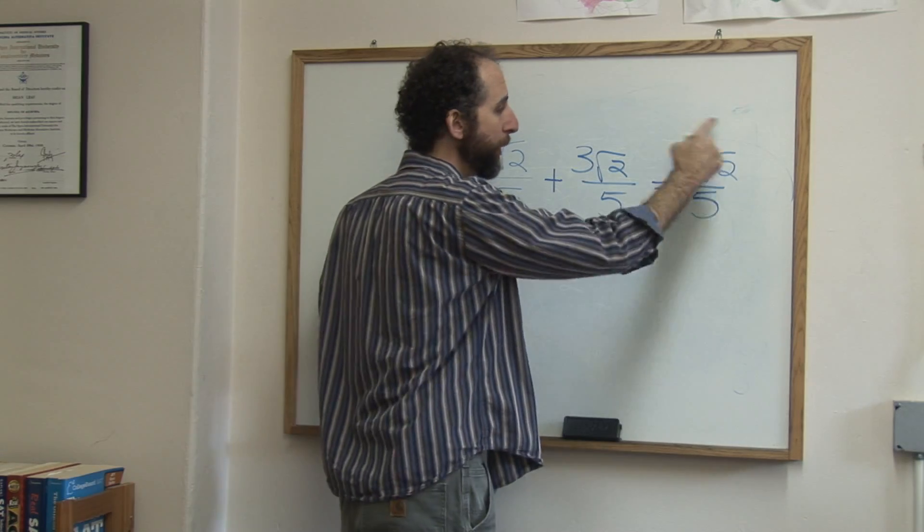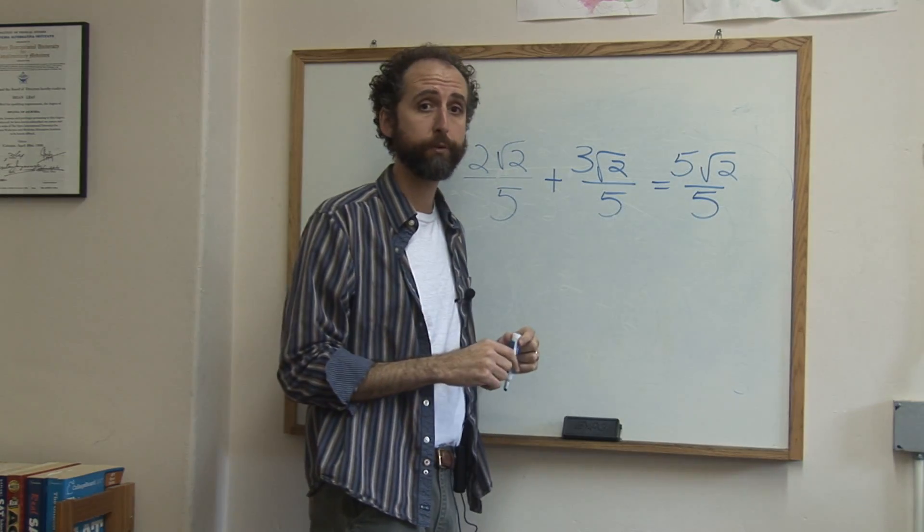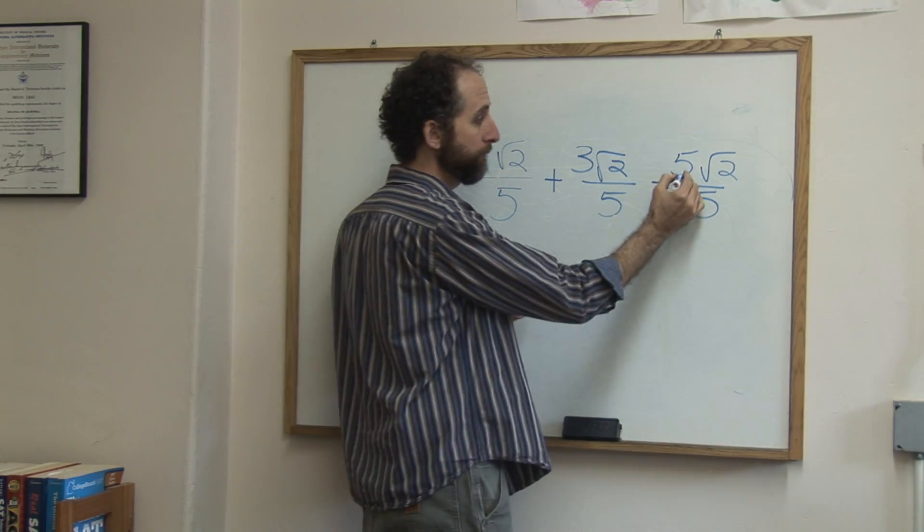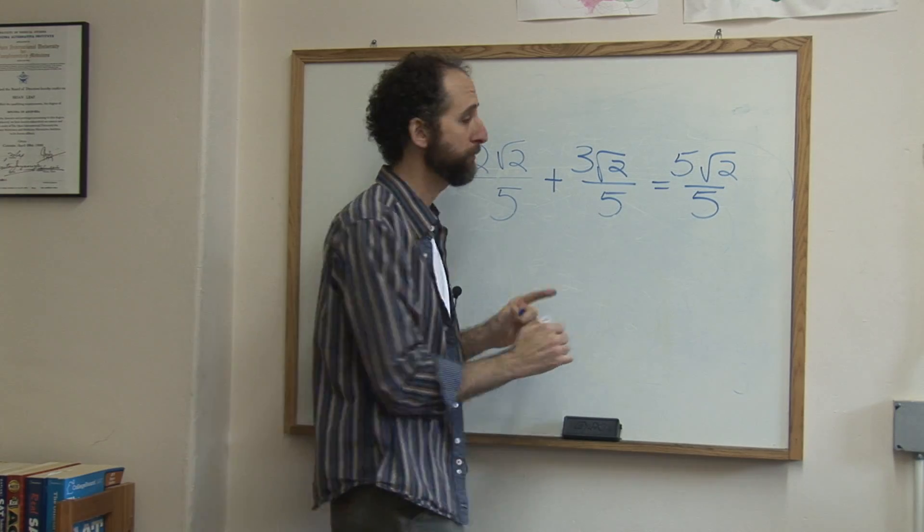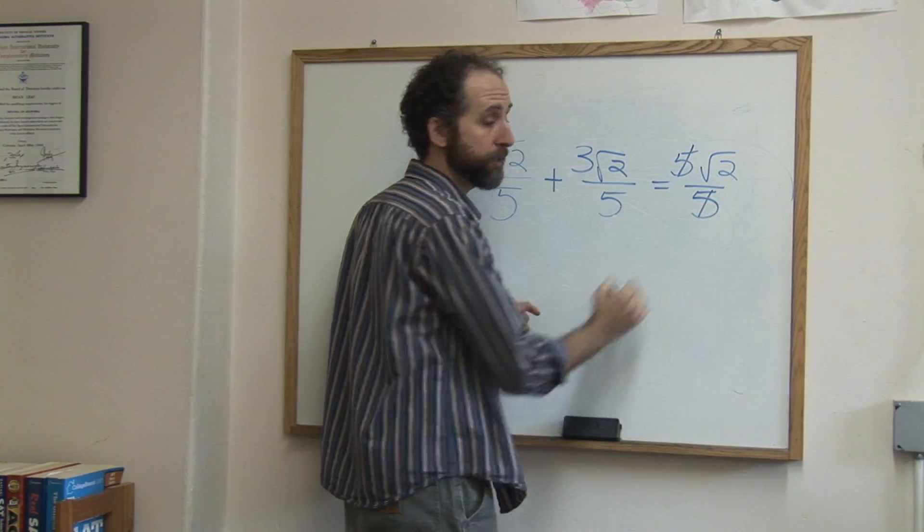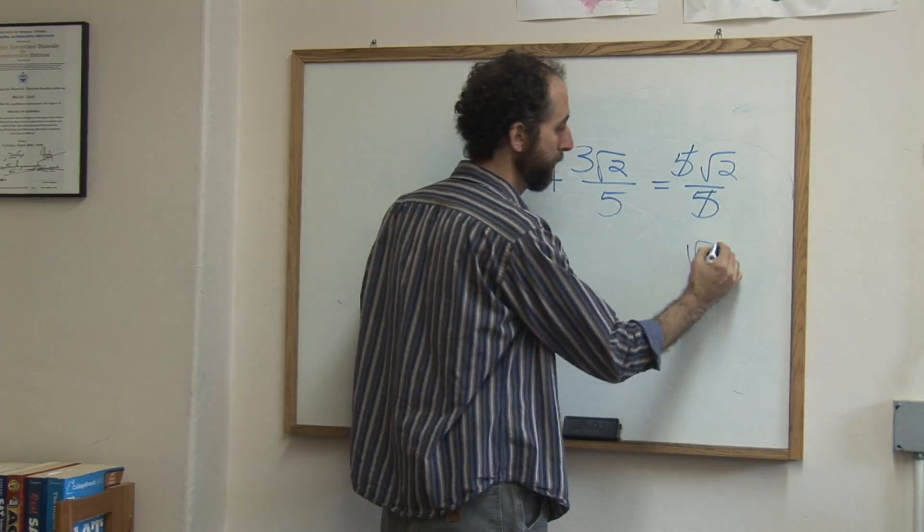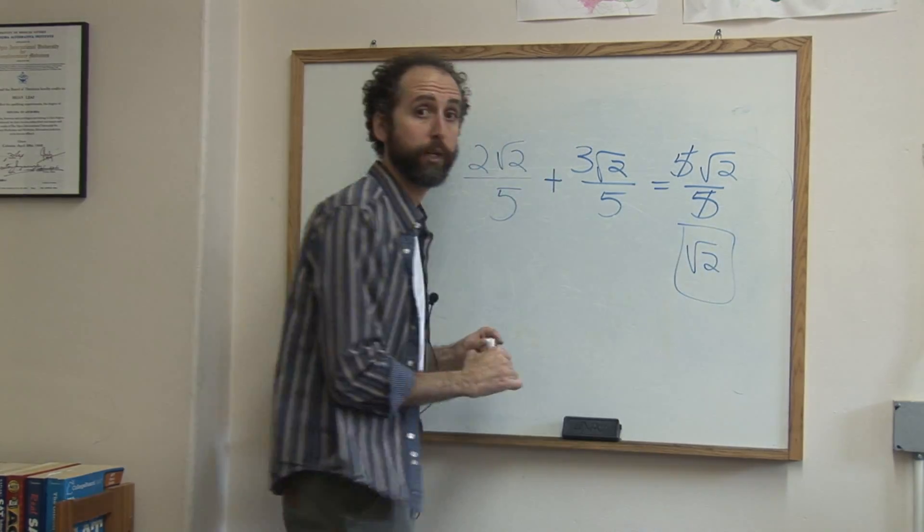So now, whenever you end with a fraction, it's always a good idea to reduce if you can. In this case, five over five is going to cancel. Five over five is one. So that cancels out, leaving me square root of two as the final answer.